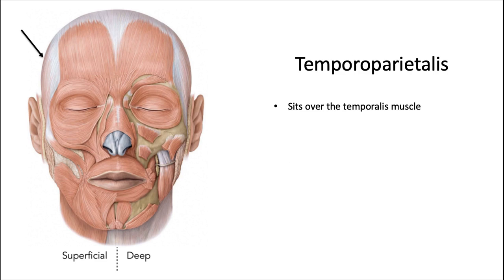The temporoparietalis muscle is located laterally on the side of the skull. It runs transversely, perpendicular to the occipitofrontalis, and sits over the temporalis muscle.